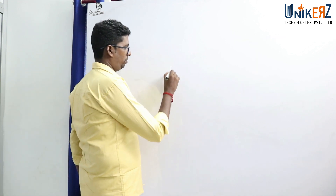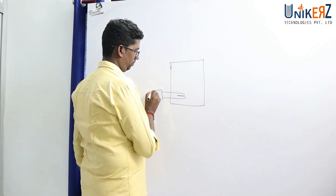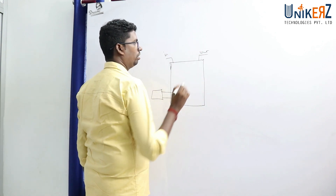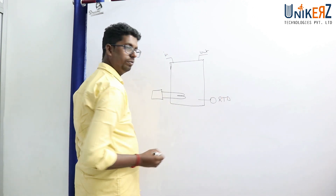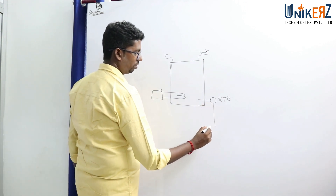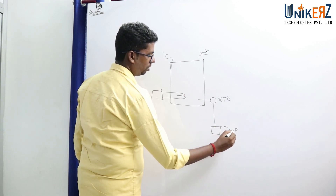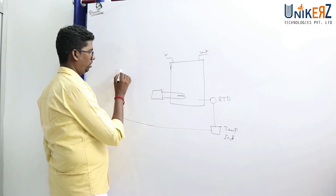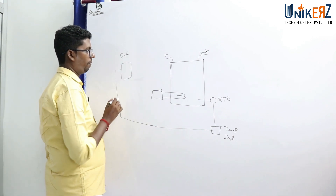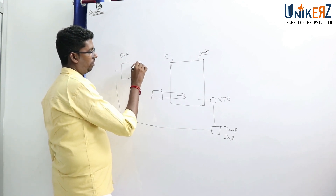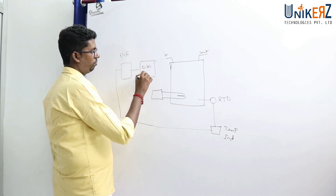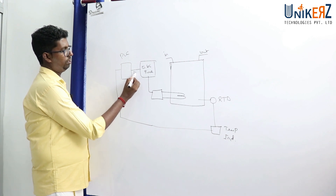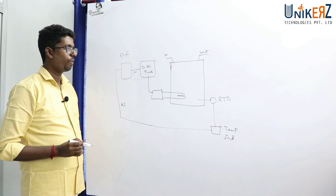Let's discuss a heater example from an earlier video. Water is in and out. We have an RTD, which gives a local indication. Temperature indicator — that means 4-20 mA signal. This goes to the PLC. This is the output — the electrical panel, the power, the digital output (DO), the analog input (AI), and the power.